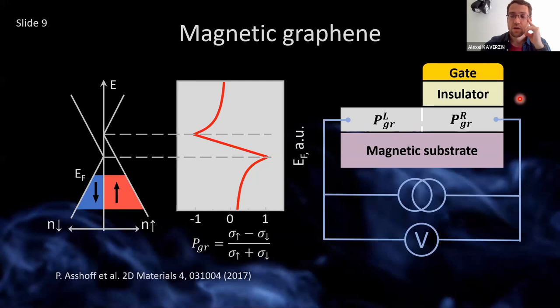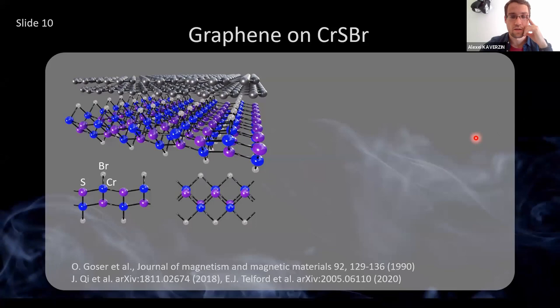Now I think I have covered all the background. So I can move on to the interesting stuff — what we have done experimentally. You see here the structure of our sample. It's CSB bulk, but here I only show monolayer. CSB is chromium sulfide bromide. From the side you see all the atoms in the crystal structure: chromium, bromide, and sulfur. Chromium is the source of magnetic order.